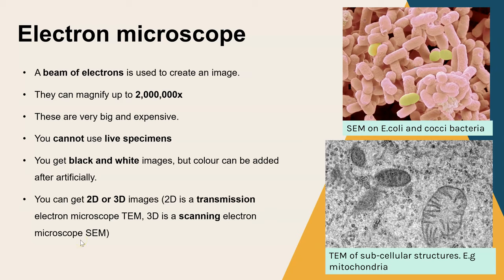There are two different types of electron microscopes. There's the transmission electron microscope, and you can see the results of that at the bottom — you get 2D images. A scanning electron microscope gives a 3D image, as we can see in the top one — a 3D image of E. coli and cocci bacteria. The lower image from the transmission electron microscope shows mitochondria, which are the subcellular structures.